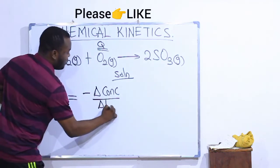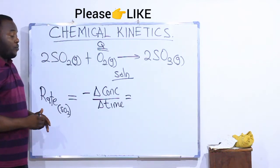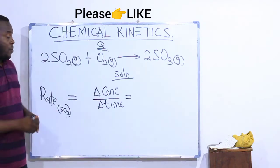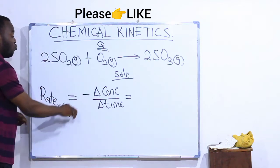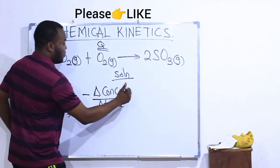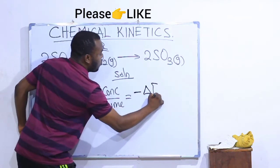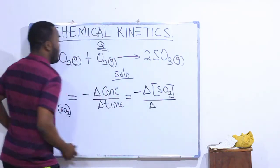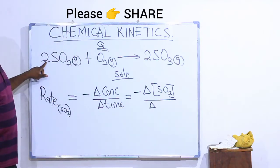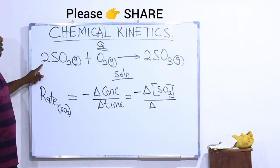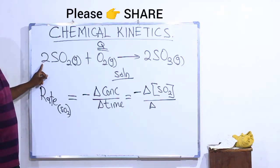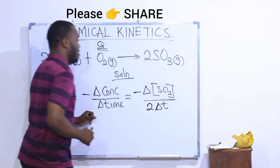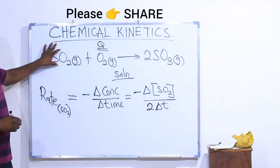Because of that decrease in quantity as the reaction goes on, anything dealing with a reactant will carry a negative sign. So it will be: negative change in concentration of SO2 divided by the change in time. But before I write the time, we are going to multiply by the coefficient of SO2 in the balanced equation. SO2 has a coefficient of 2, so it becomes: negative change in concentration of SO2 divided by 2 times the change in time. This is the expression with respect to SO2.